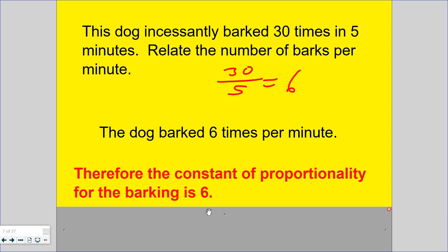So the dog barked 6 times per minute. Therefore, the constant of proportionality for the barking is 6. That means if I know any minutes, such as like 10 minutes, it will bark times 6, 60 barks. If there are 12 minutes, 12 times 6, 72 barks.